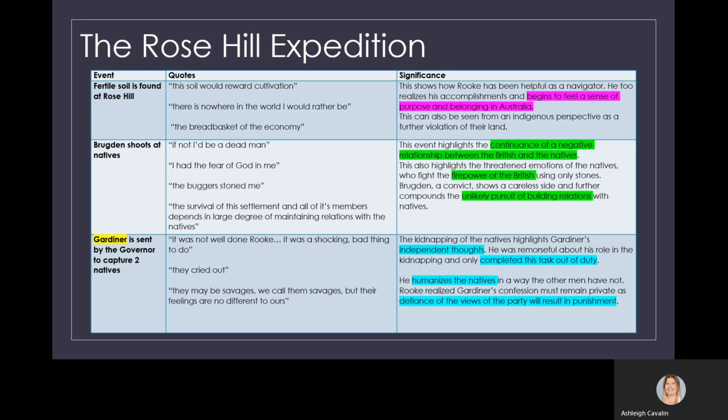As a result, Lieutenant Gardiner is sent by the Governor to capture two of the natives. The kidnapping of the natives highlights Gardiner's independent thoughts. He was very remorseful about his role in kidnapping these two men and only completed the task out of duty. He humanises the natives in a way that other men have not. Rook has realised that Gardiner, in coming to him and describing these events, that everything that Gardiner has said about the kidnapping and his remorse and regrets must remain private between Gardiner and Rook. The fact that these views are against the British party will result in Gardiner being punished. As such, Rook keeps this a secret.